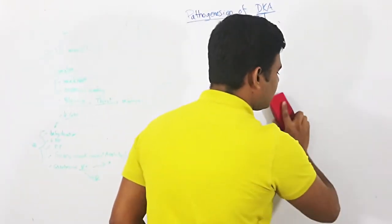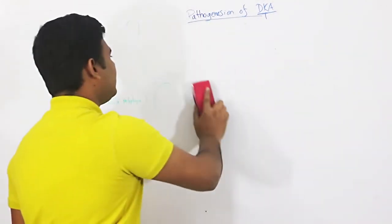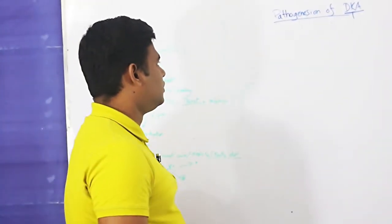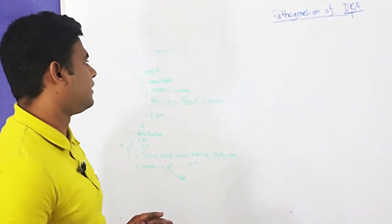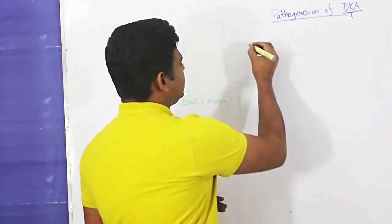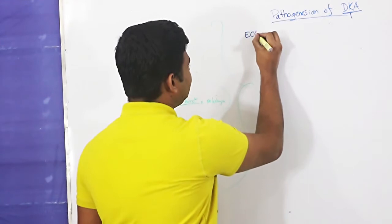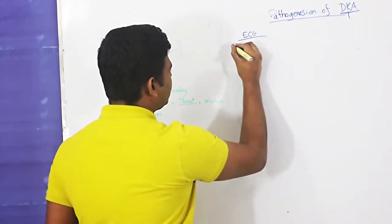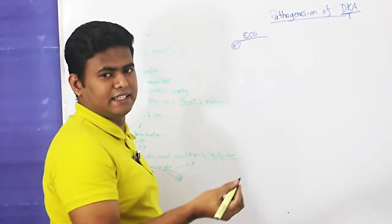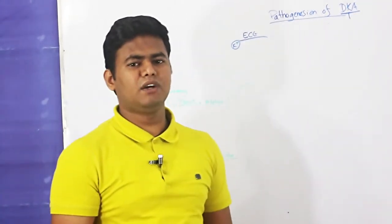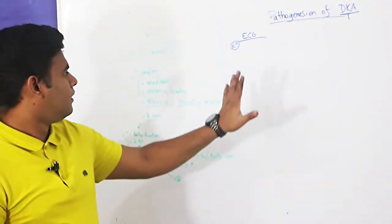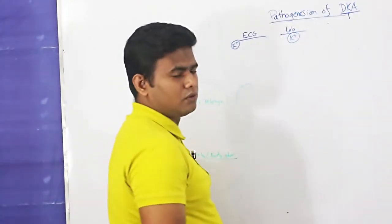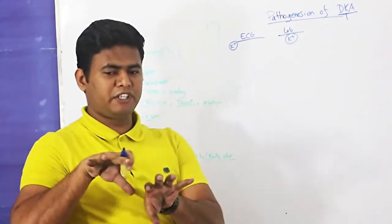What about potassium? Potassium is normal initially, but potassium will reduce with treatment, leading to hypokalemia. It depends on our treatment. We need to check whether positive potassium disturbances — hypokalemia or hyperkalemia — are present. From the lab, we know the actual potassium level. Potassium levels depend on the treatment.